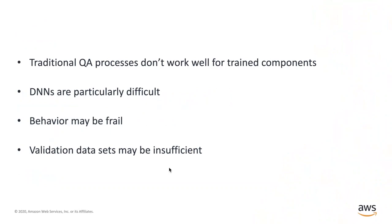Furthermore, a lot of the traditional QA processes that the software industry has adopted in the past 50 years don't work terribly well for trained components. If you apply the testing QA stack to a trained component, it doesn't provide the same level of reassurance. Among all trained components, deep neural networks are particularly problematic — their behavior may be surprisingly frail, meaning it works fine many times, but then starts failing and misbehaving in unexpected ways.